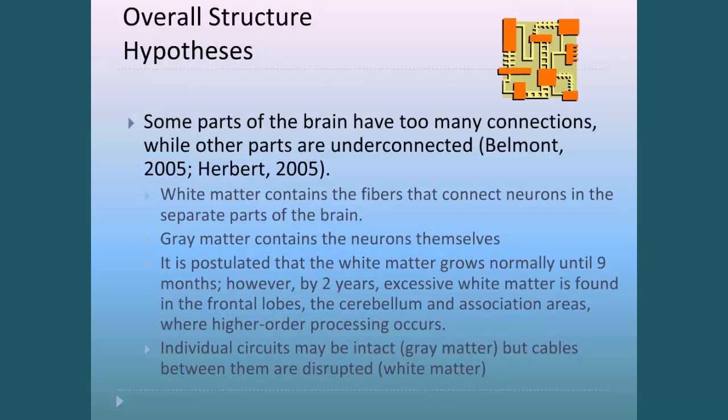What we've realized is, if you'll pardon my very simplified explanation, the gray matter that holds the information for children with autism is usually intact — not always, but mostly intact. So they can store and hold amazing amounts of information. However, the white matter, which provides the communication between those circuit boards, may be where the problem lies.